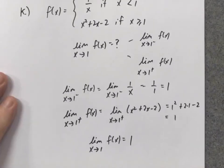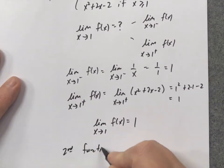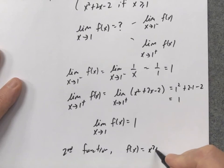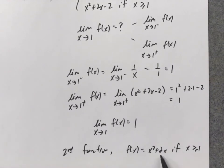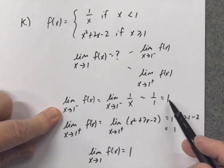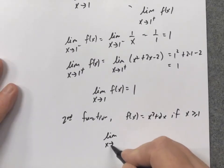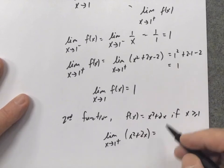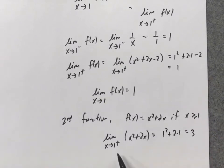Just for teaching purposes, what if the second function had been f of x equals x squared plus 2x if x is greater than or equal to 1? The first function stays the same, so from the low side the limit is still 1. For this new second function, I look at the high side and plug in 1 for x: 1 squared plus 2 times 1 equals 3. So the limit as x approaches 1 from the high side is 3.